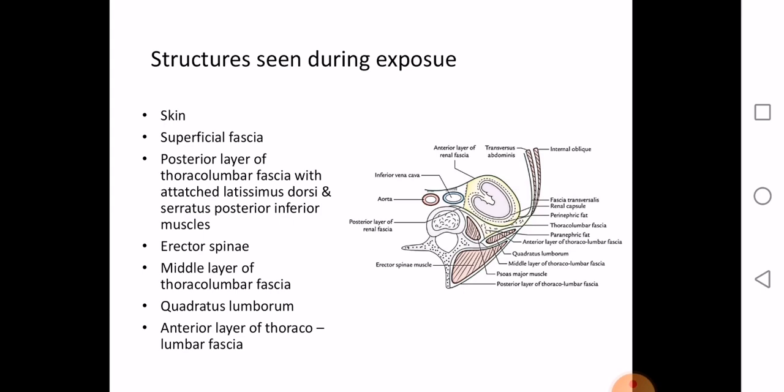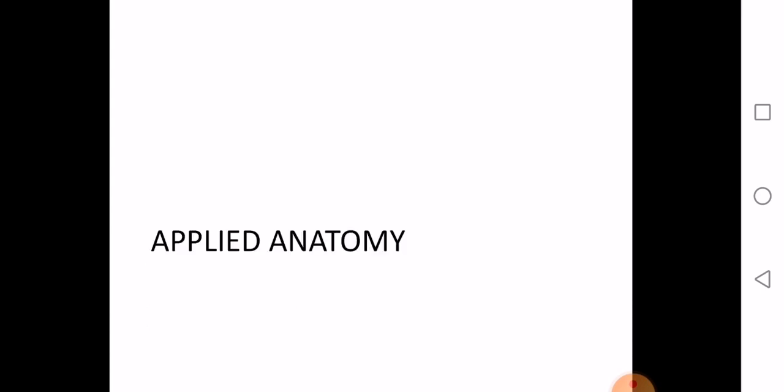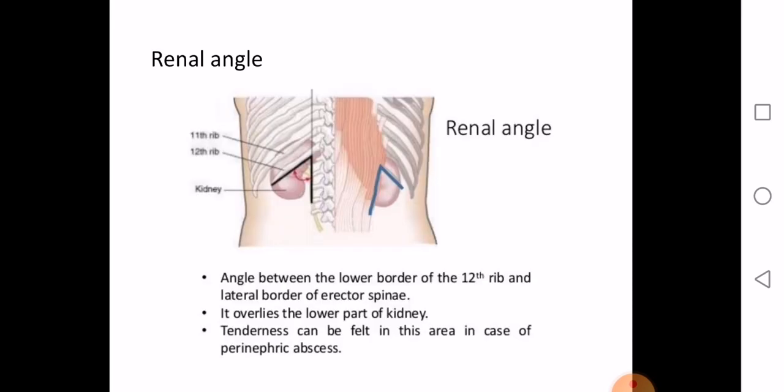Hemodialysis, or artificial kidney treatment, is used when renal transplantation is not possible. An arteriovenous fistula is surgically created between the radial artery and the cephalic vein. Connecting an artery to a vein makes the vein stronger and enlarges it. This arterialized vein is then connected to the artificial kidney machine, where blood passes through a semi-permeable membrane for exchange of metabolites. The filtered blood is returned to the patient via the median cubital vein.